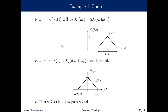In the Fourier domain, the analytic signal has a positive triangle centered at ωc with bandwidth 2B and amplitude 1, scaled by e^(jφ). The complex envelope shifts this triangle left by ωc, giving a triangle centered at the origin scaled by e^(jφ). This confirms that the complex envelope x̃(t) is a low-pass signal.